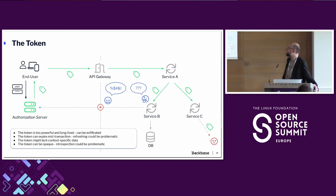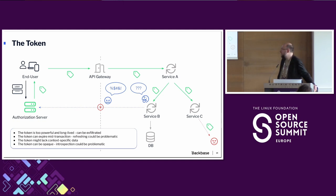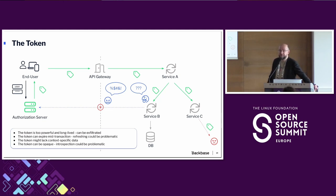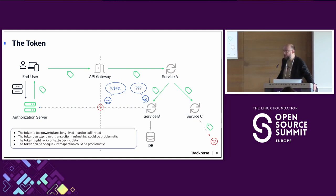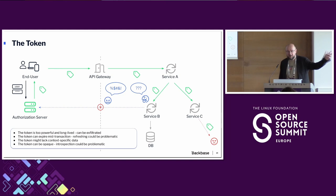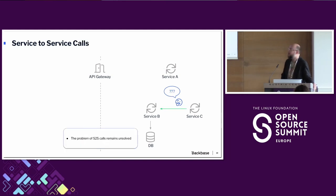The problem is also in the external token itself — it is very powerful and long-lived. If it's exfiltrated by a malicious actor, it can be used for nasty things. On the other hand, it is short-lived, so access tokens do expire. What happens if your token expires mid-transaction? The call to service A will succeed and the call to service B will fail, resulting in a failed transaction overall. External tokens might be opaque, contain no data at all, and they normally lack request-specific data like the IP address of the caller — something we might need internally to authorize that call. And if the token is opaque, you need to contact the issuer to introspect it. Finally, it doesn't in any way solve the problem of service-to-service calls.